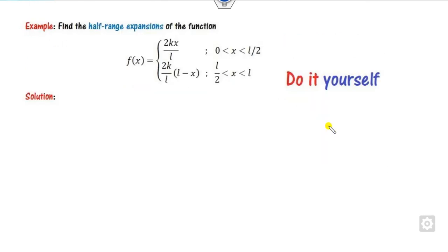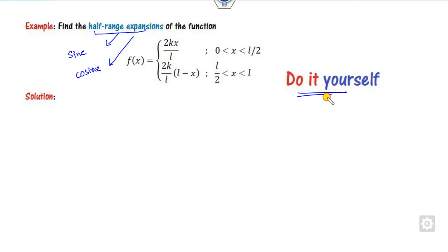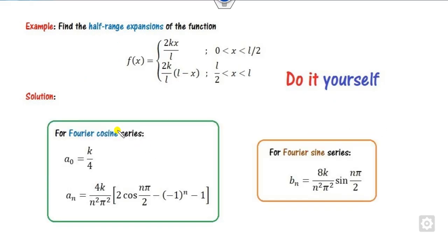This is an exercise for you — try to find the half-range series where they are not specifying sine or cosine, meaning you must calculate both. For the Fourier cosine series, bₙ = 0; for the sine series, you must find bₙ. Let me know your answer in the comment box so I can verify whether it is correct or not.